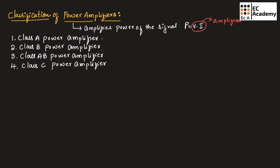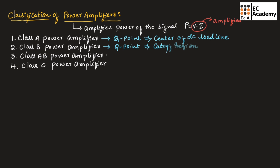In class A power amplifier, the Q point is at the center of the DC load line. In class B power amplifier, the Q point or operating point is at the cutoff region. And in class AB power amplifier, the Q point is in between the center of the DC load line and the cutoff region.